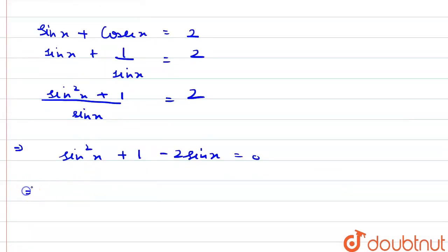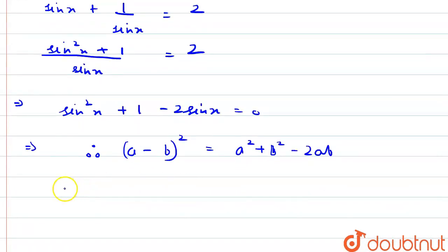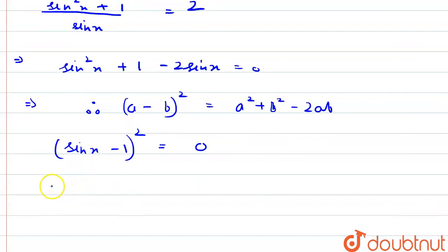Now, we can write using the formula a minus b whole square equal to a squared plus b squared minus 2ab. We can write this as sin x minus 1 whole square equal to 0. Now, what we will get? We will get sin x is equal to 1.